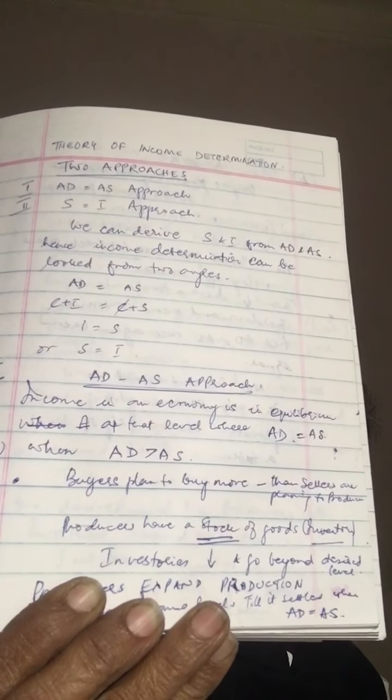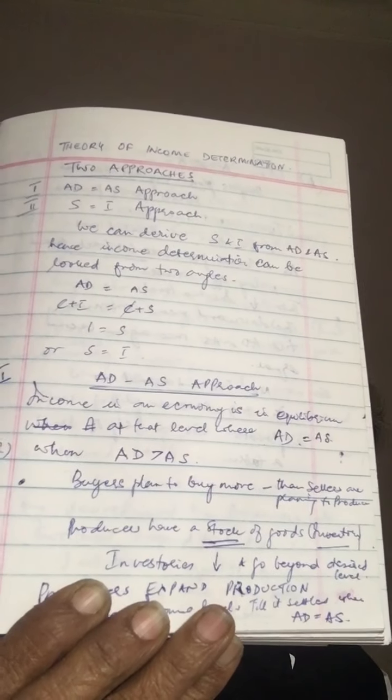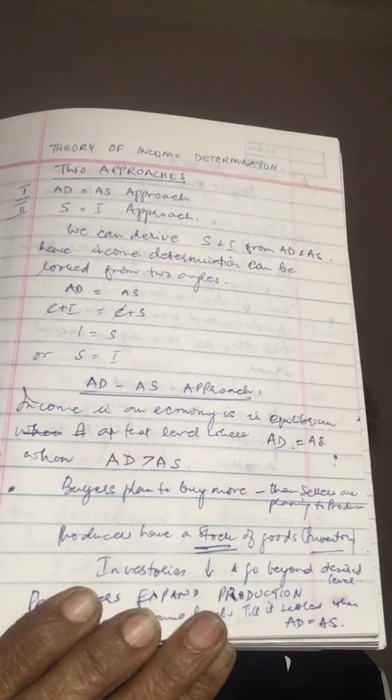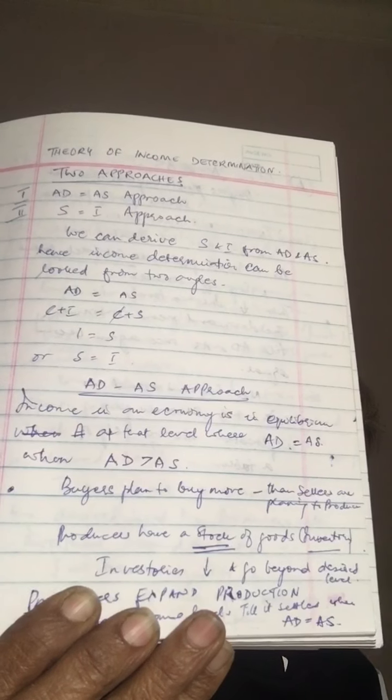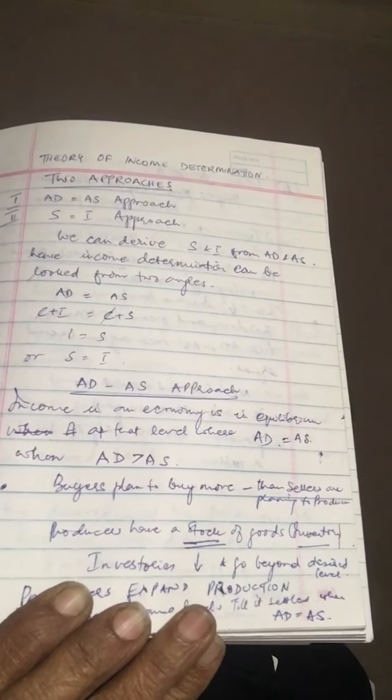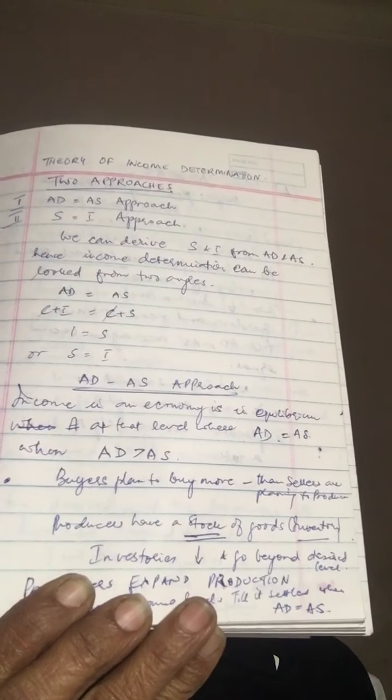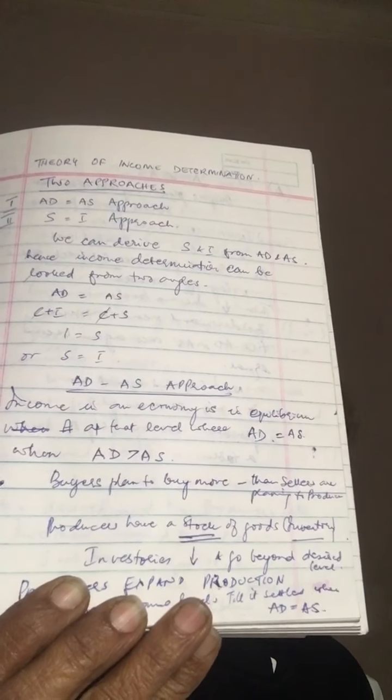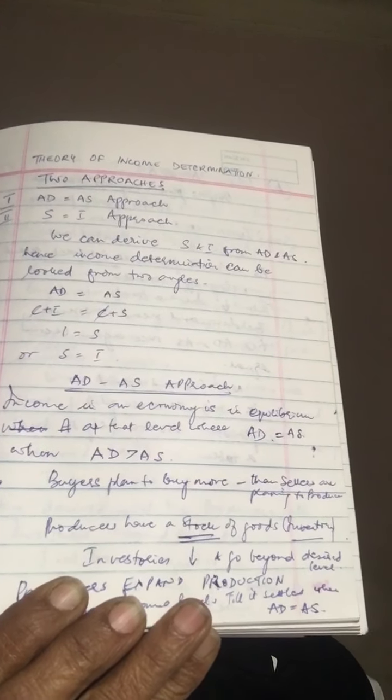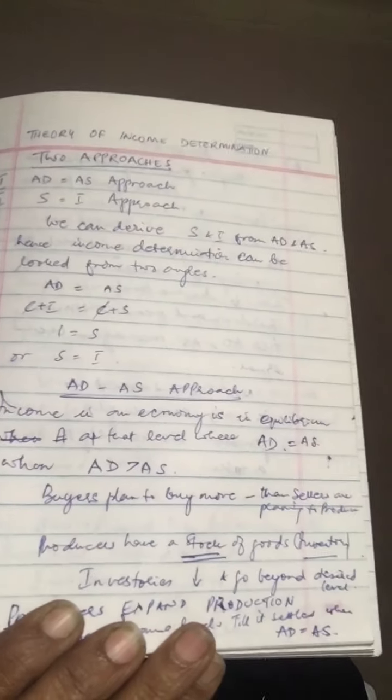So what is the AD-AS approach? Income in an economy is in equilibrium at that level at which aggregate demand equals aggregate supply. And saving and investment approach is where the savings in the economy are equal to the investments made.